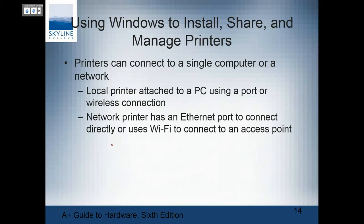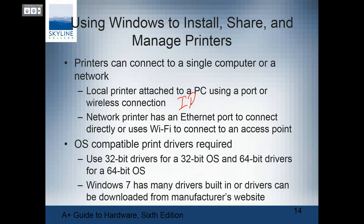For Windows installation: local printers are attached to a PC using a port or wireless connection — also using an IP address. A network printer has an Ethernet port to connect directly or uses Wi-Fi. To me, a network printer is something we can control access to. Anything you can connect to directly and manage directly is a local printer. When you install a local printer, that machine becomes a print server.